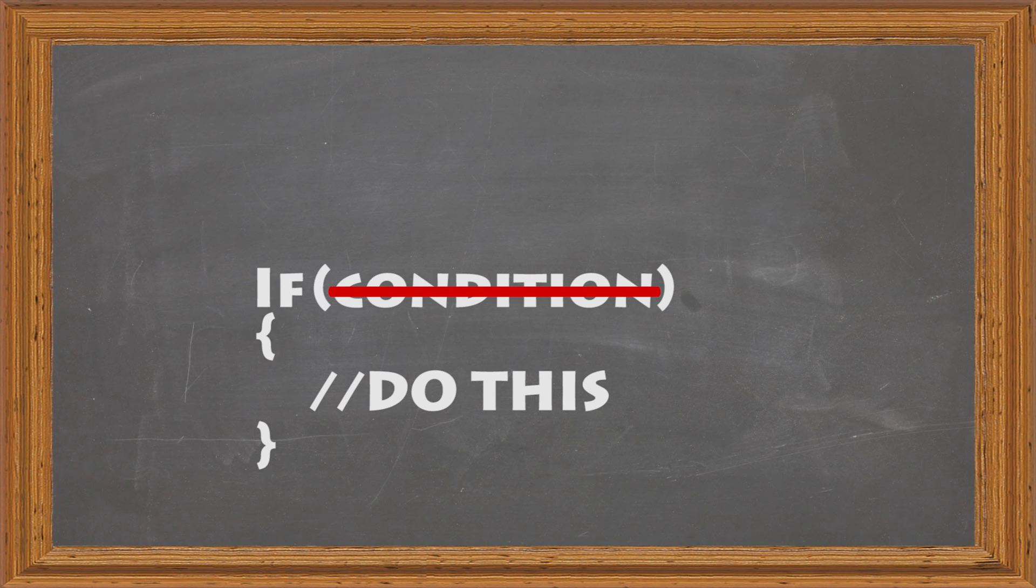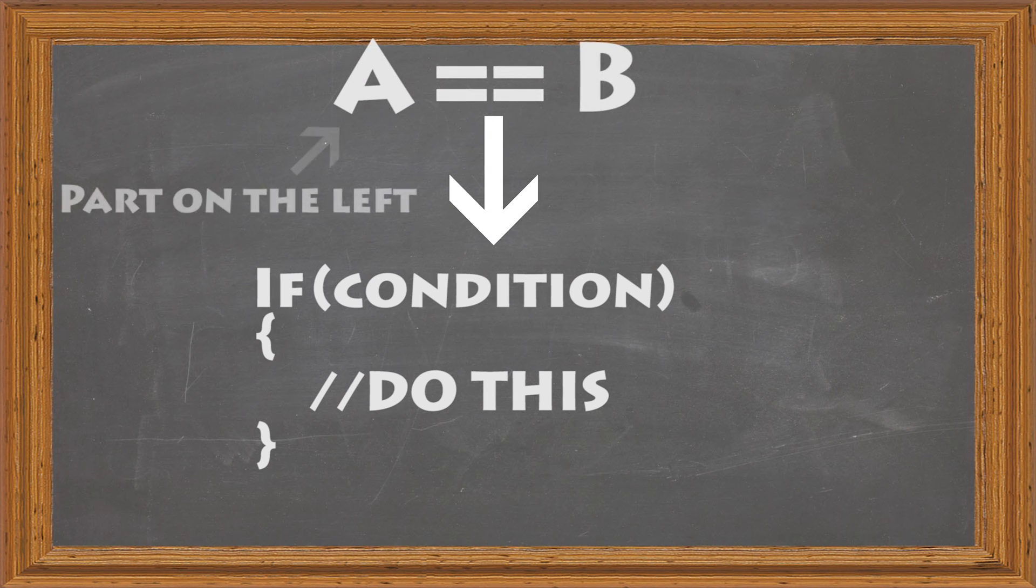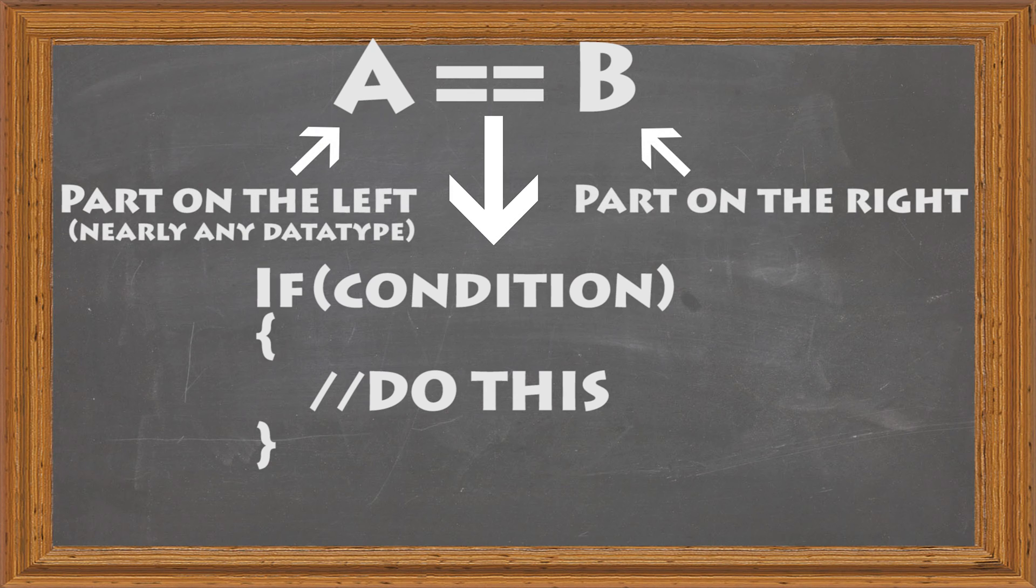We have six operators we can use here. Let's look at them. First up is the equals equals operator. This will check if the part on the left equals the part on the right. The part on the left can be just about any data type, and the part on the right can also be just about any data type.